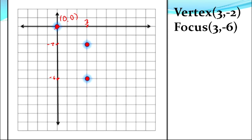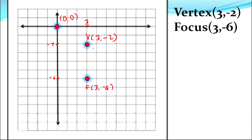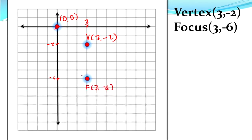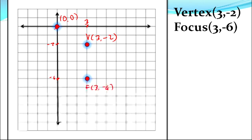Through inspection, we can determine the orientation of the parabola. The vertex is at (3, -2) and the focus is at (3, -6). Since the focus is below the vertex, the opening of the parabola will be downward. The focus acts as an indicator of the opening direction — when the vertex is above and the focus is below, the opening is downward.